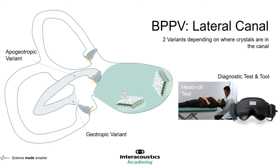What makes lateral canal BPPV a bit more complex than anterior and posterior canal BPPV is that the position of the crystals inside the canal can be in two locations. This gives different nystagmus characteristics when doing the head roll test. One position is very close or attached to the cupula — we call this apogeotropic lateral canal BPPV. The other position is closer to the utricle, giving us the geotropic variant of BPPV, which has a different nystagmus characteristic.